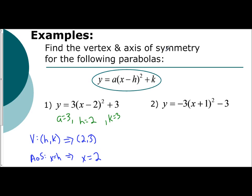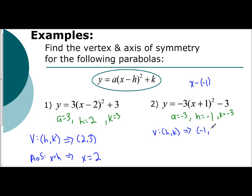Let's look at number 2. We have a is negative 3, k is negative 3, and h is the opposite of what you see. Since the form says x minus h, what number are you subtracting to make this a positive 1? Well, that is a negative 1, so h is negative 1. Our vertex is the coordinate h, k, which means our vertex is the coordinate (negative 1, negative 3). Our axis of symmetry is x equals h, so x equals negative 1.